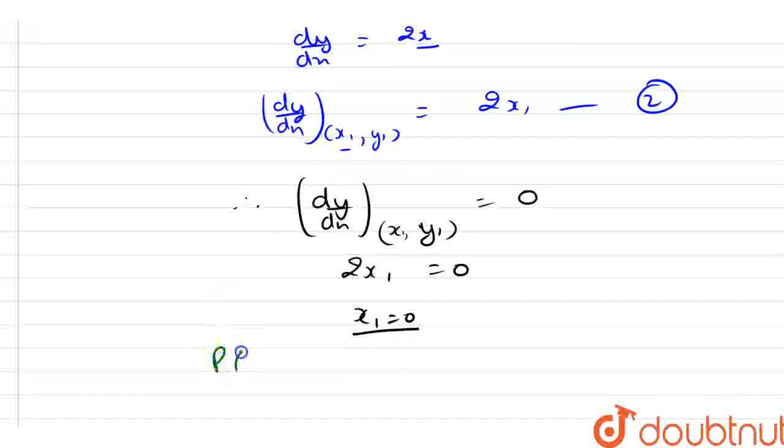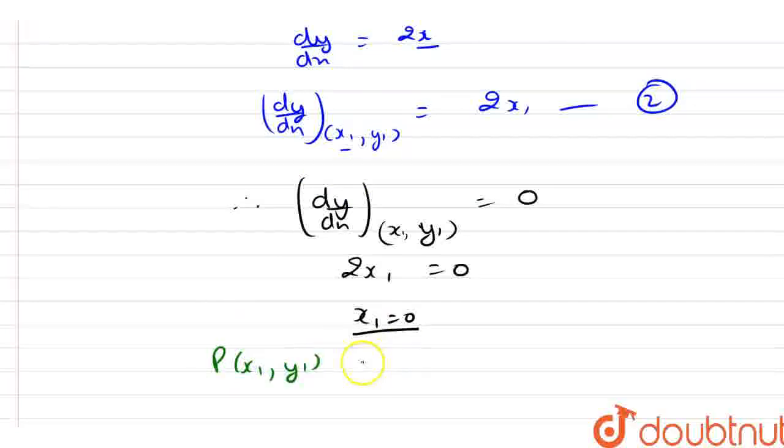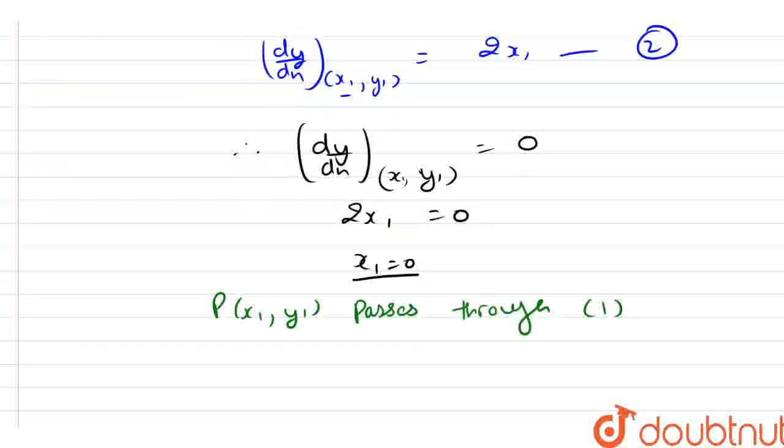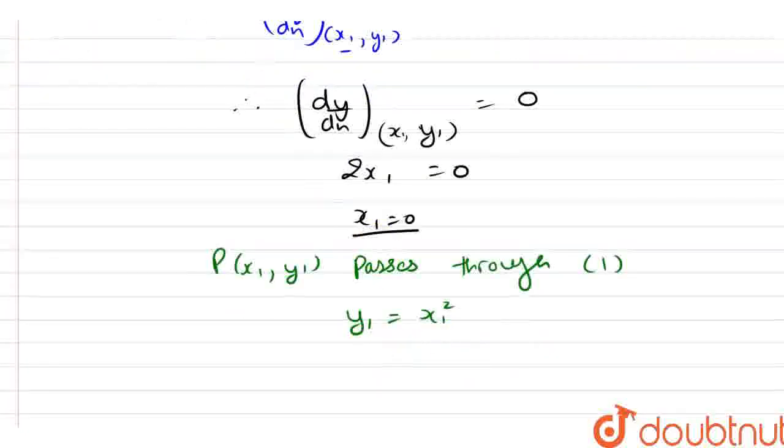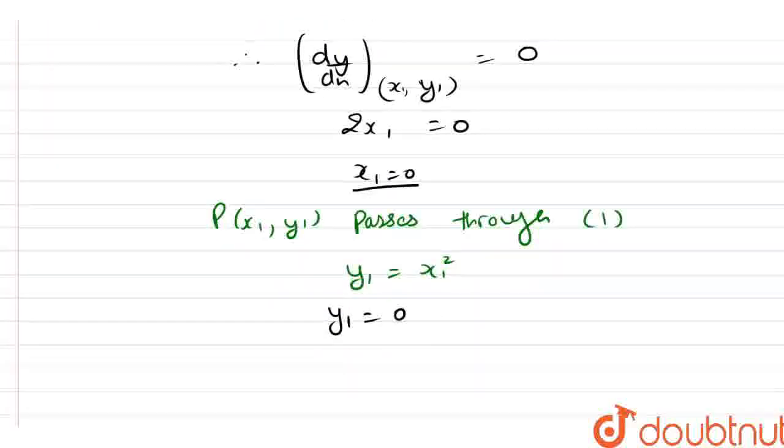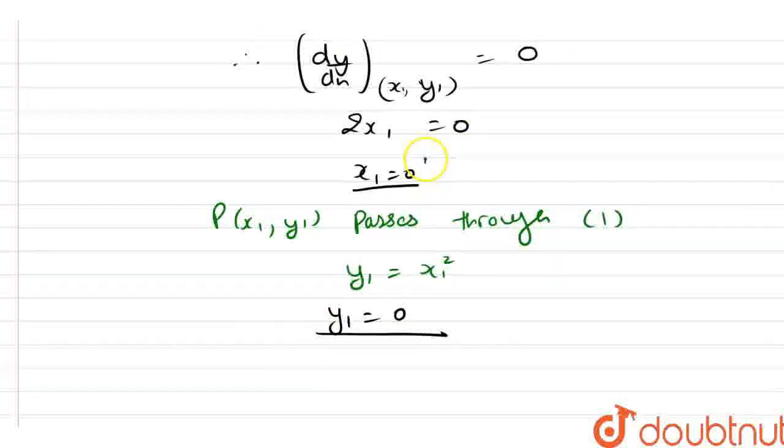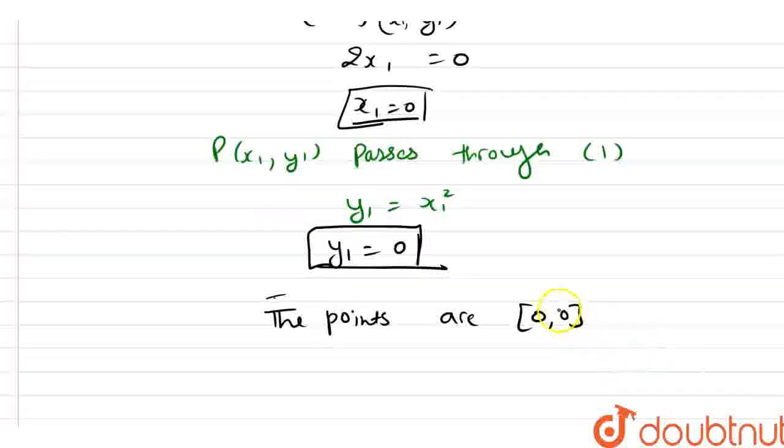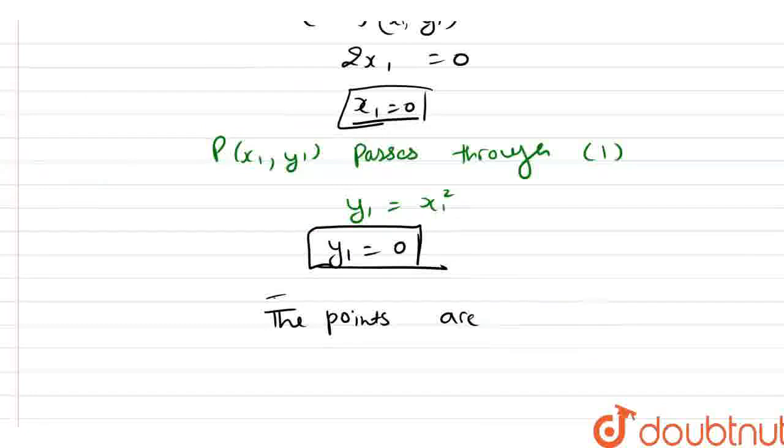Now, since the point (x1, y1) passes through our point number 1, from here we have y1 equals x1 whole square and as we know that x1 is 0, so from here y1 is also equal to 0. Now, from here we get the value of x1 and y1 as well. So, from here we can see that the points are (0, 0) and this is our final answer.